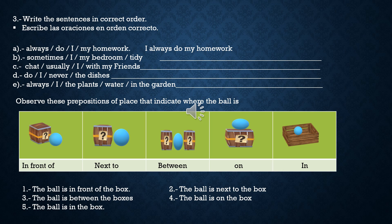First activity: write a sentence in correct order. Escribe las oraciones en el orden correcto. Example: 'Always do I my homework.' I always do my homework. Muy importante: primero el pronombre, adverbio de frecuencia, acción o verbo, y complemento de la oración.